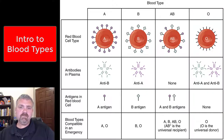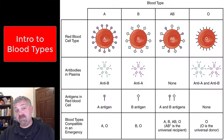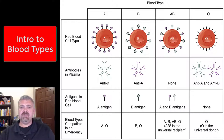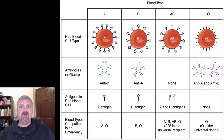So why does this matter? The main reason you have to know somebody's blood type is to make sure that if you give them someone else's blood, it's compatible. We better talk about the RH system next as well.